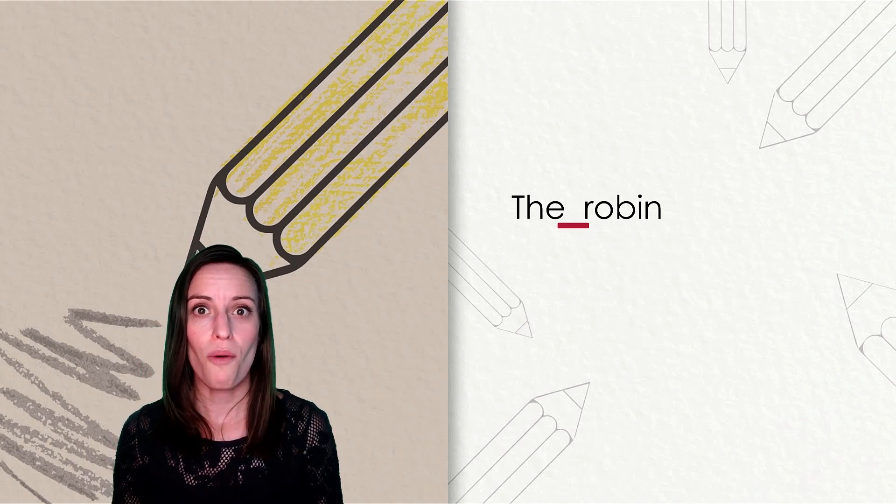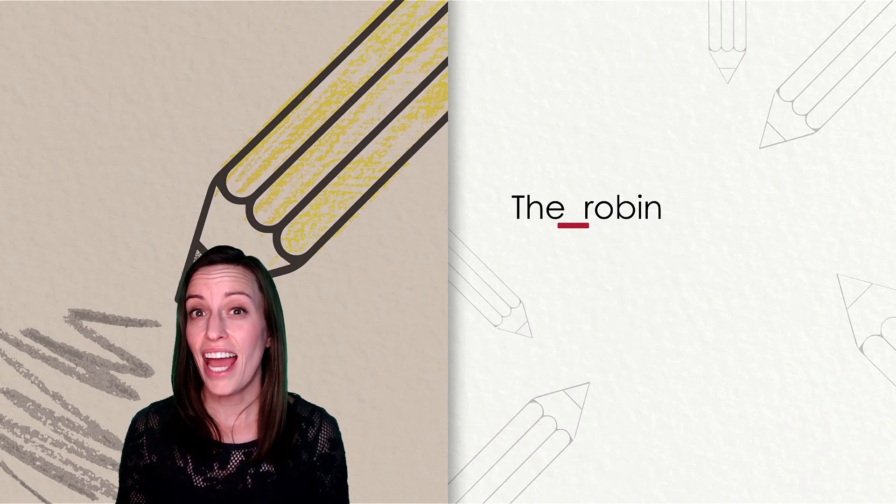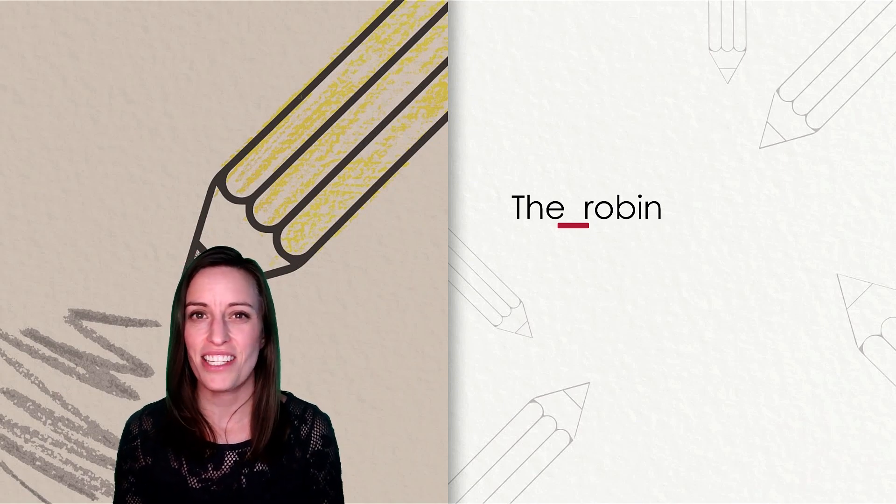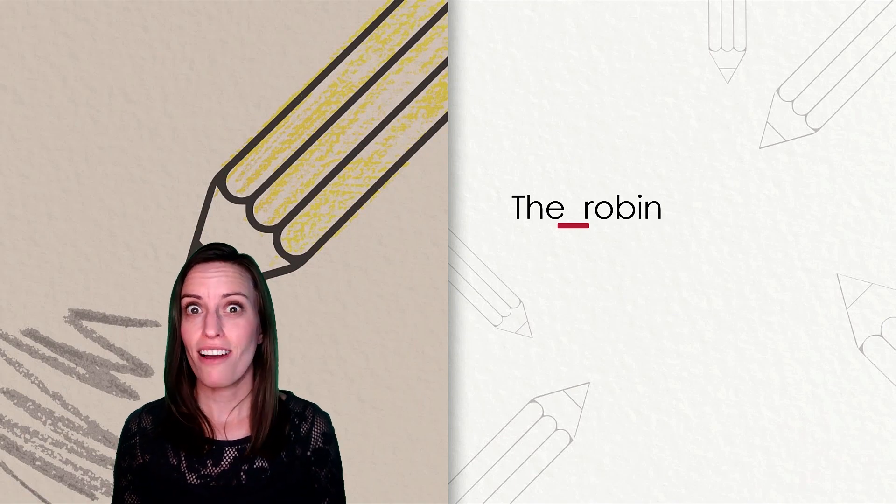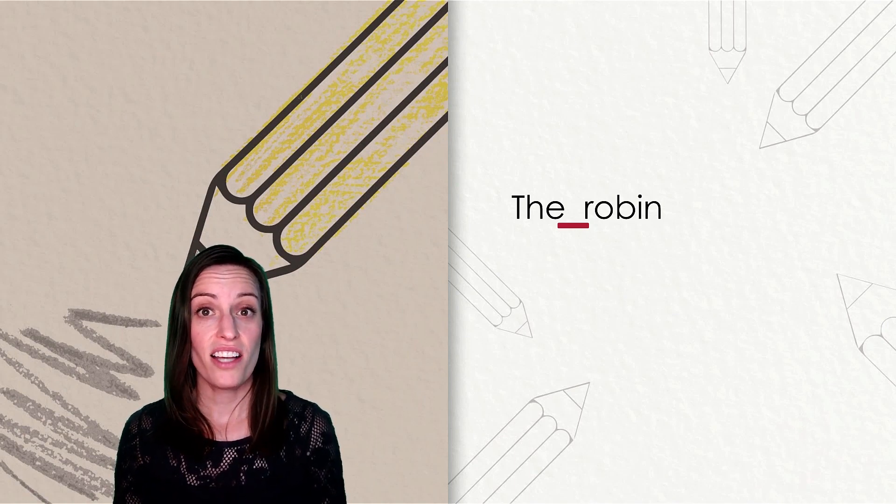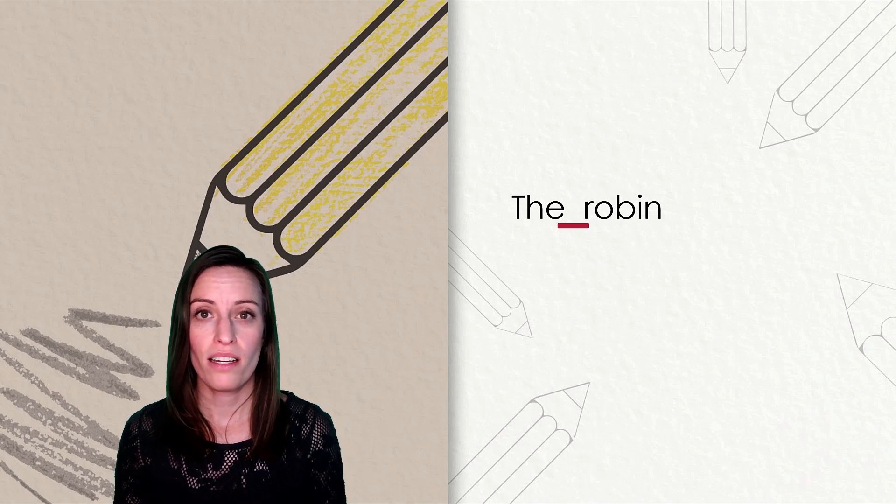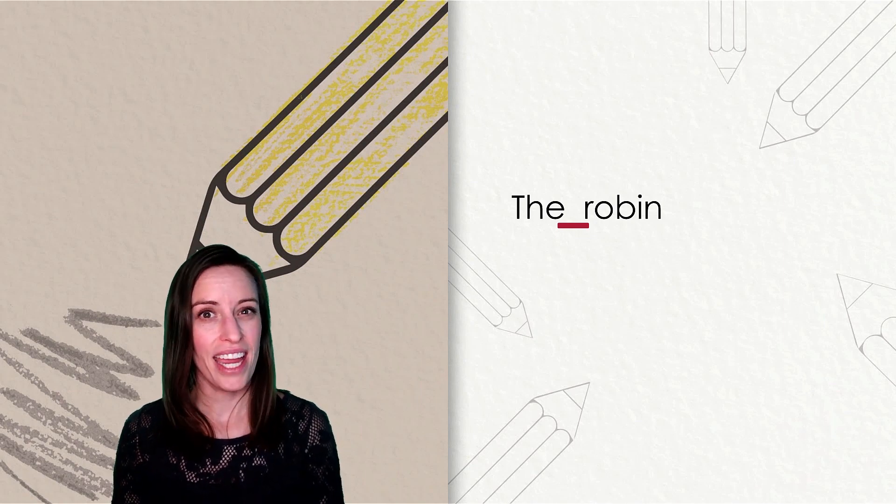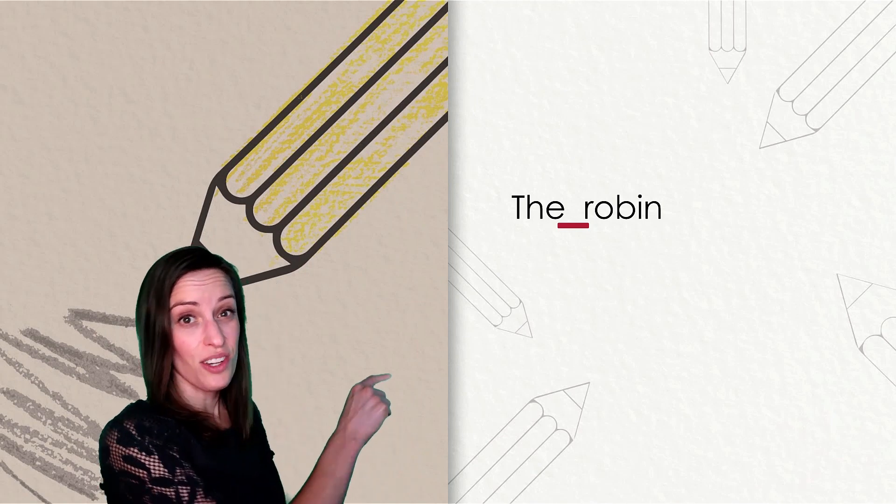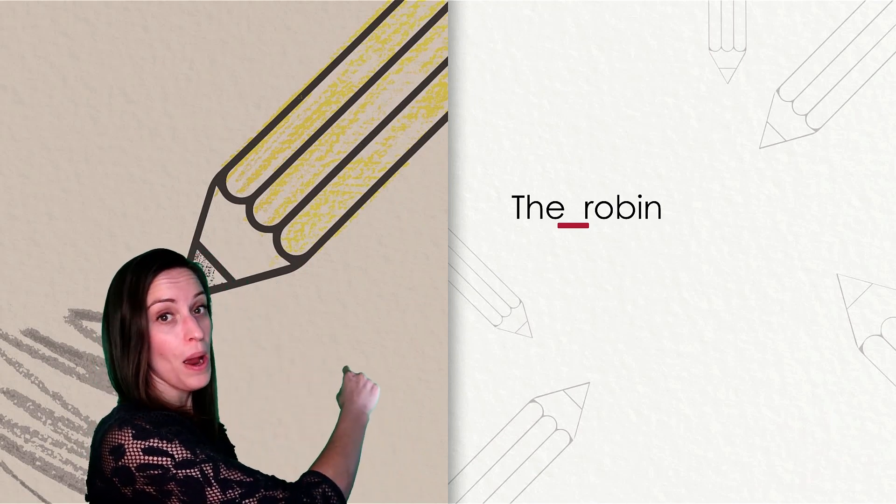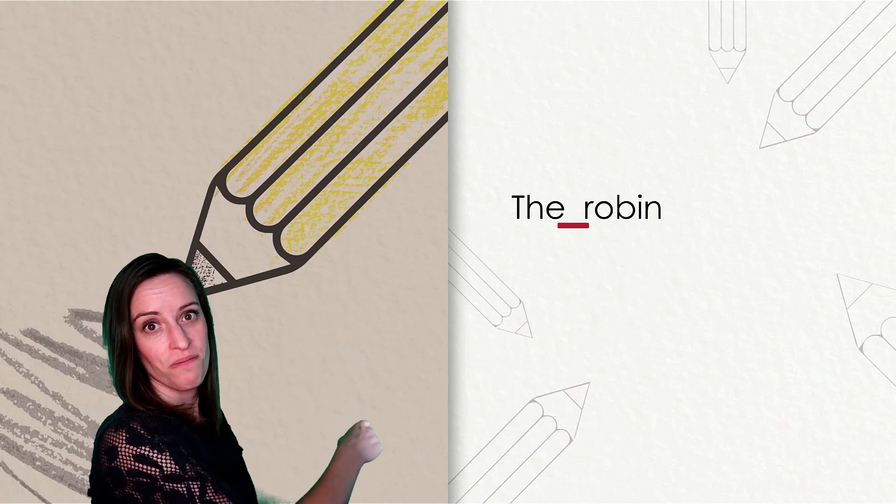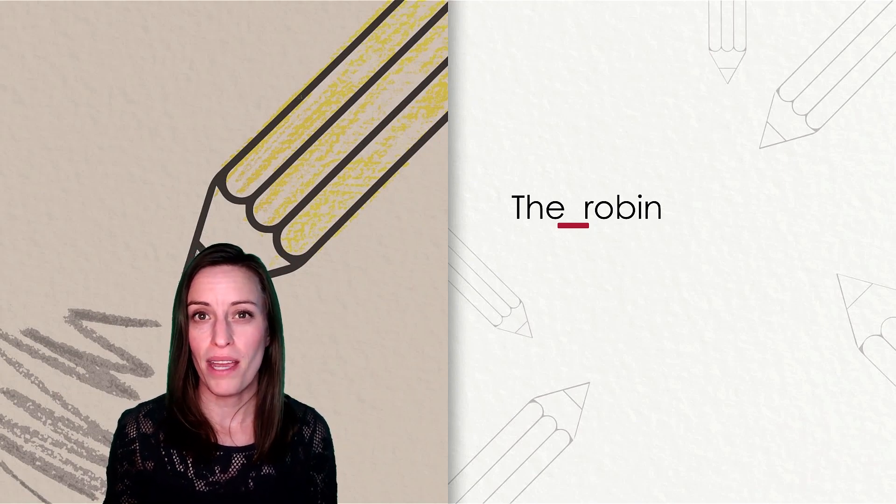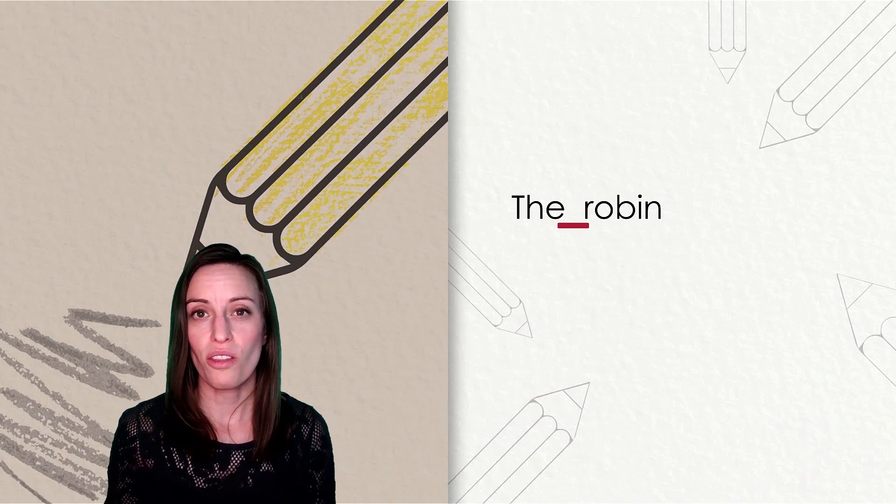The robin. Start that word the with an uppercase t. Starting at the top line, pull straight down and then cross at the top line. The letter h also is a tall letter. It starts at the top line, pull down, up, over, make a hump. And then for that lowercase e, starting just under the middle line, pull over, back, and around. You just wrote the word the.